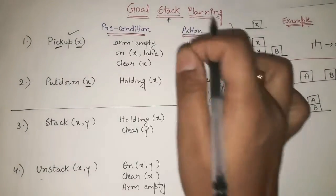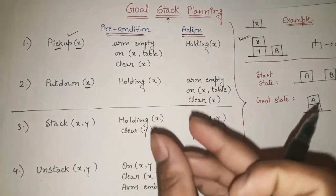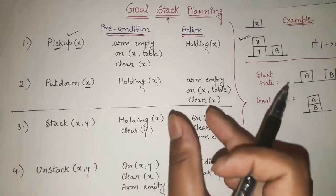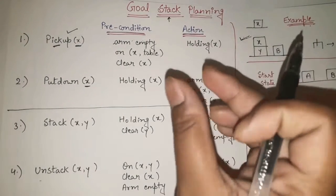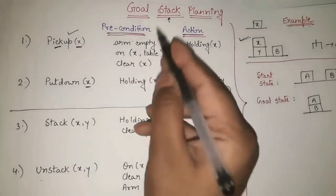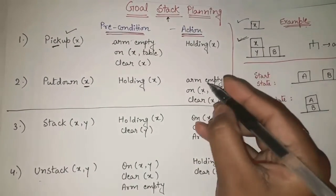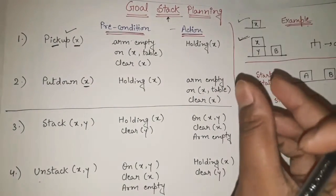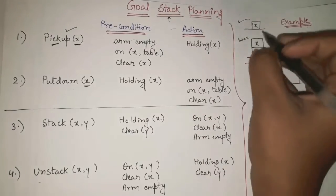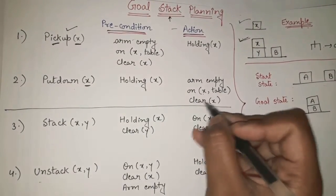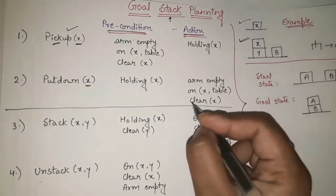Put Down of X means we want to put the X block down onto the table. The precondition is: Holding X — the arm must be holding X. Once Put Down is executed, the actions are: Arm Empty (arm is now free), On(X, Table) (X is now on the table), and Clear X (nothing is above X).